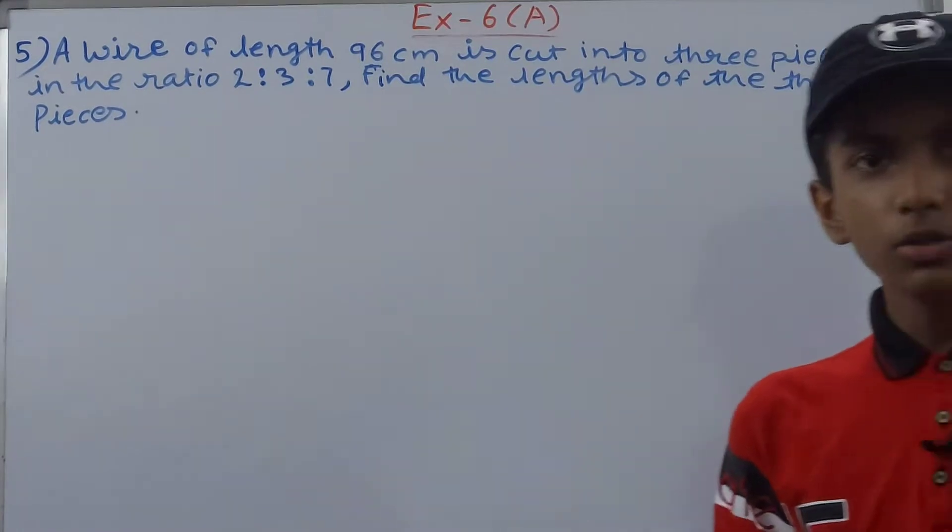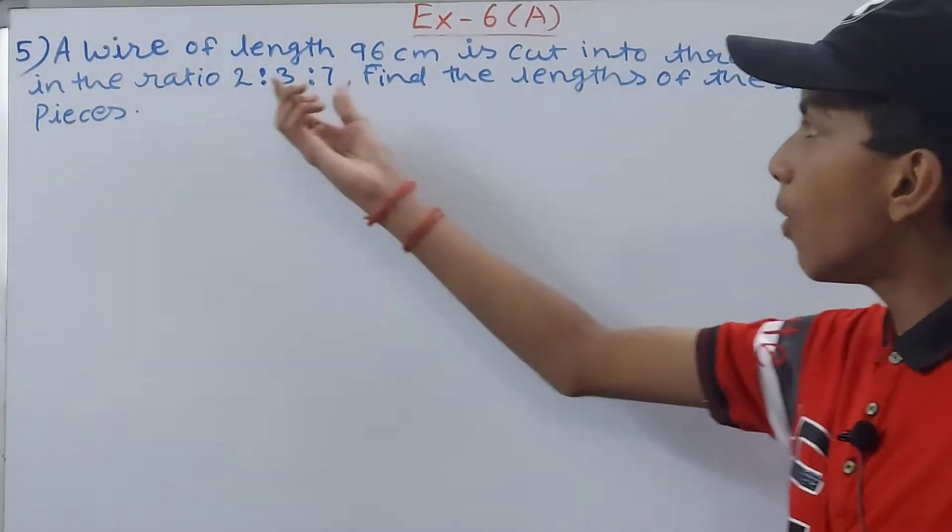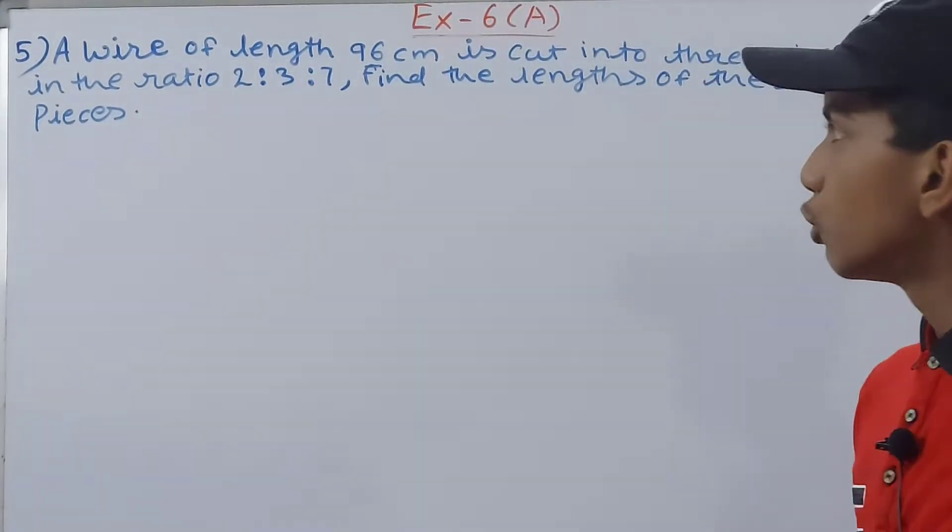To find the length of all three pieces, what we will do is first of all we would add all the three terms: 2, 3, 7, and that is going to be 12.